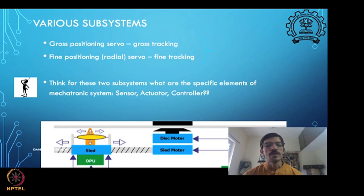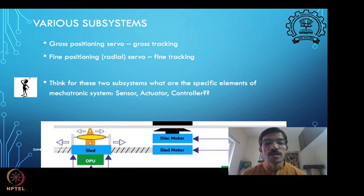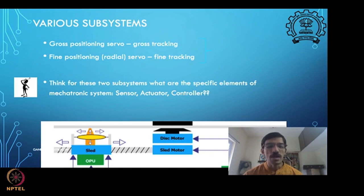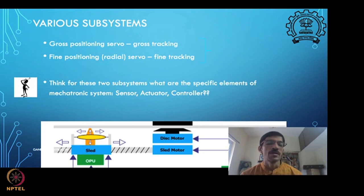You may think: this requires very fine positioning, so I could use piezo actuators, which can give fine positioning. That is one possibility. But piezos typically need very high voltage to operate. Are there other kinds of actuators that come to mind? And how would you sense whether the head is on-track or off-track?